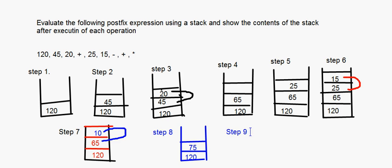Step 9: multiplication. The top two elements are multiplied: 120 times 75 equals 9000. The stack now contains just 9000, which is the final answer.